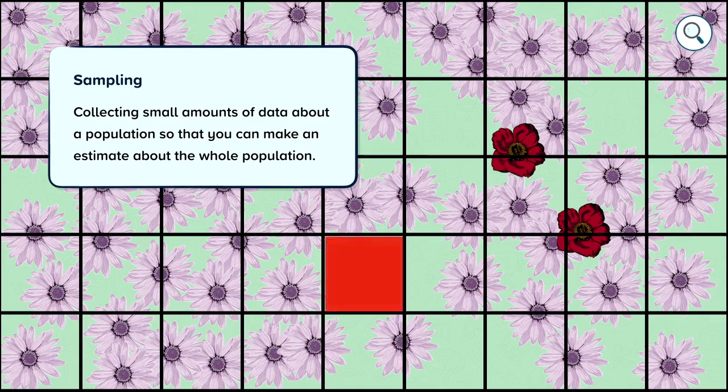For example this square has no flowers in it so if I just sampled that area I'd say there were no purple flowers in this habitat which is clearly not true. So how do we make sure that a sample is representative?